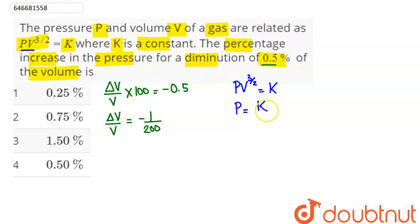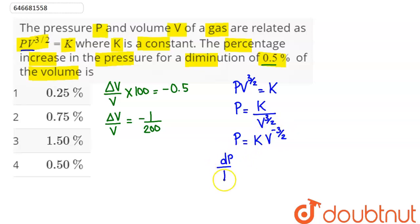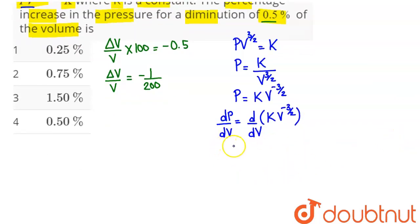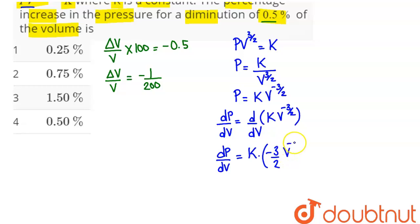Hence pressure comes as K upon V to the power 3 by 2, which means P equals K into V to the power minus 3 by 2. Now differentiating pressure with respect to volume, dP by dV equals K into the differentiation of V to the power minus 3 by 2, which gives us minus 3 by 2 into V to the power minus 5 by 2.